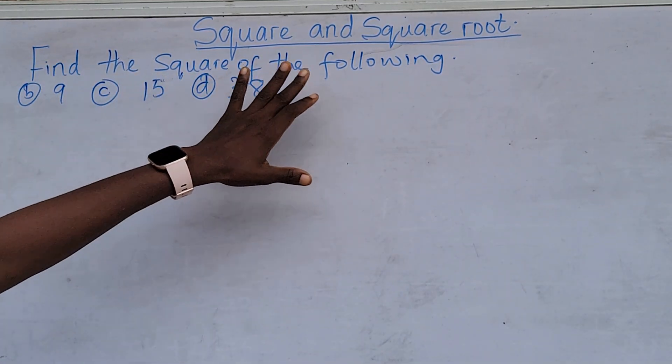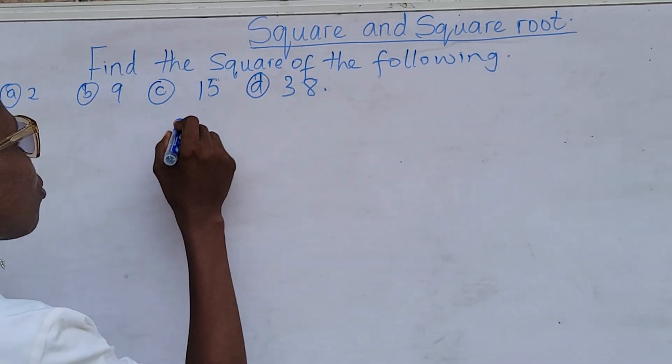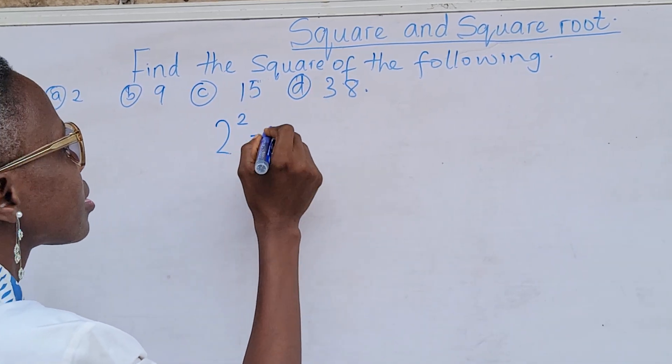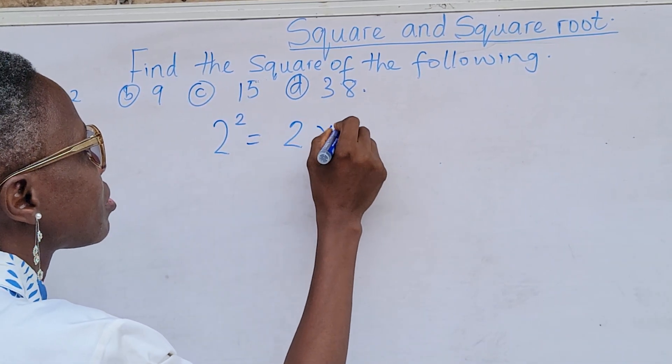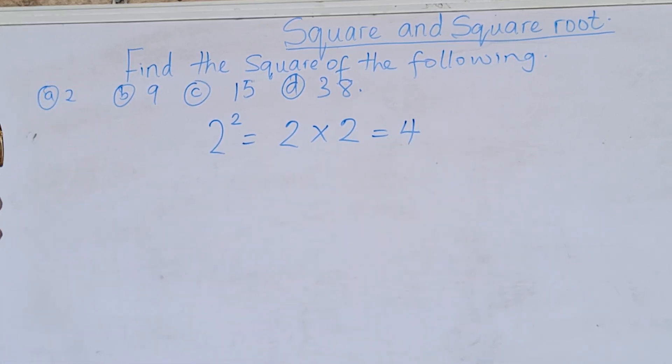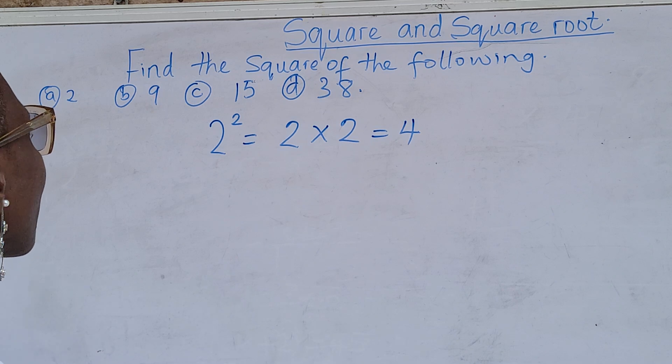Now find the square of the following. The number one is 2. So 2 squared means 2 raised to the power of 2, which means 2 times 2 is 4. So the square of 2 is 4.